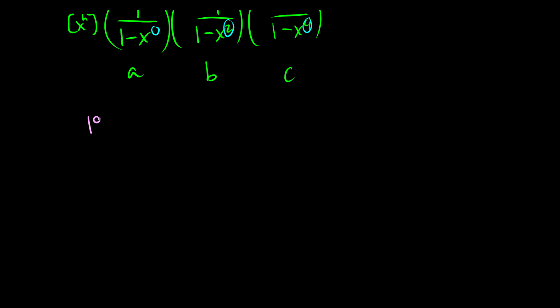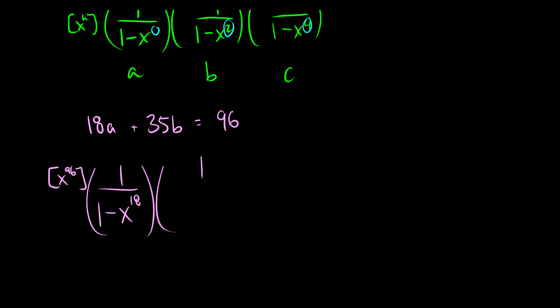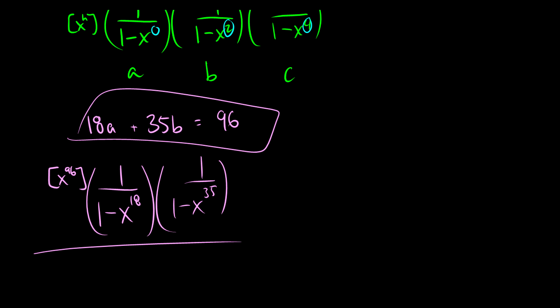Let's pick a new example: I want 18a + 35b = 96. This is the same as saying I want the 96th coefficient of 1/(1−x^18) × 1/(1−x^35). So when you understand the process of how we get to the generating function, it's very simple to look at one of these problems and identify the generating function.